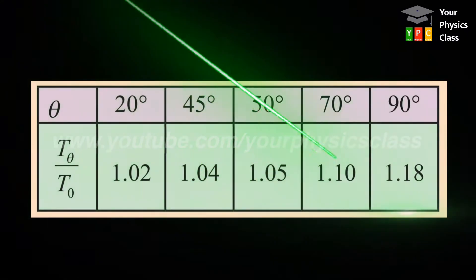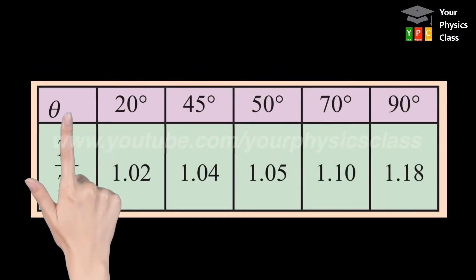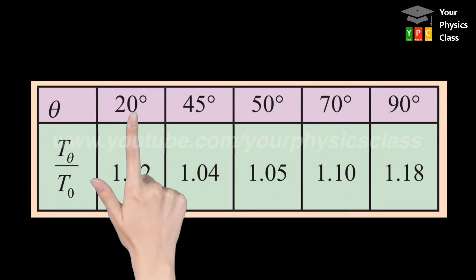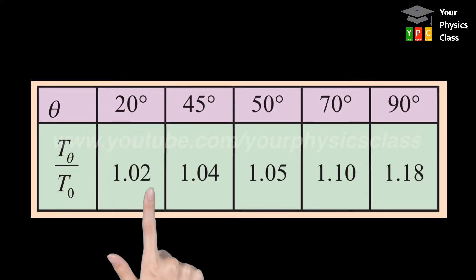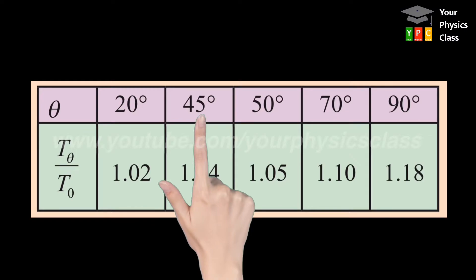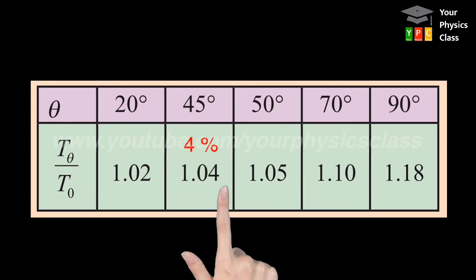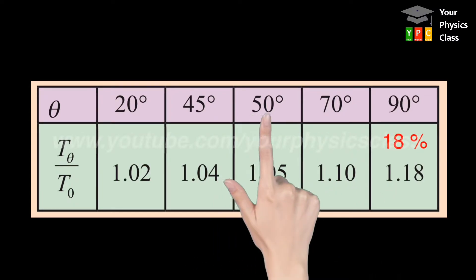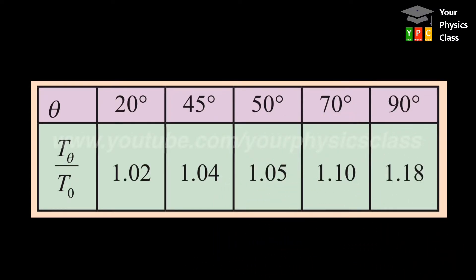Observe this table carefully. If theta equals 20 degrees, error in measurement of time period is 2%. For theta equals 45 degrees, error is 4% and increases further with increase in angular amplitude theta.